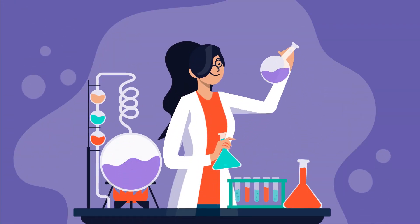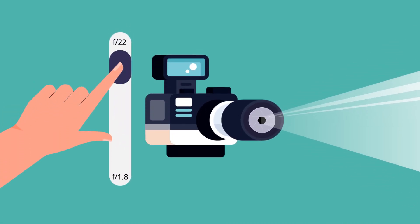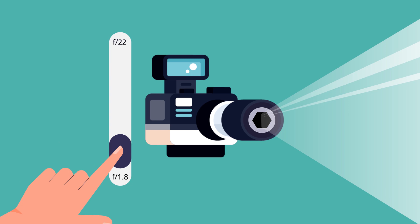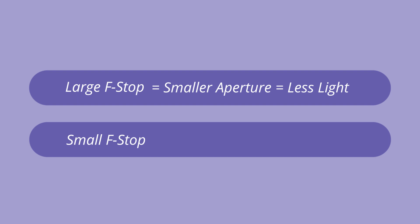What's important is not to be able to make this calculation, but rather to understand the theory behind it. Using a large f-stop will yield a smaller aperture diameter, reducing the amount of light entering your camera. On the other hand, using a small f-stop will yield a larger aperture diameter, enabling more light to enter your camera. Large f-stop equals smaller aperture equals less light. Small f-stop equals larger aperture equals more light.